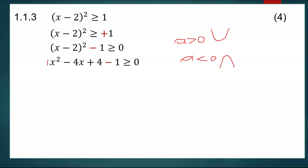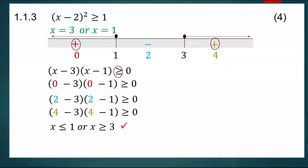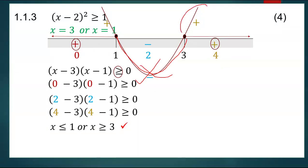You draw the graph that passes through the critical values opening upward — concave up. The part above the number line represents positive values and the part below represents negative values. So from one to three the values of x are negative — we don't want those. We want the parts where values of x result in a positive solution, which gives the same answer. Now let's move to question 1.2.